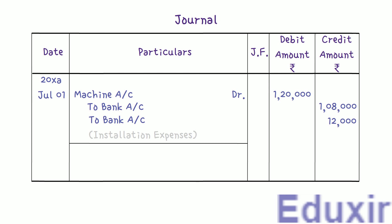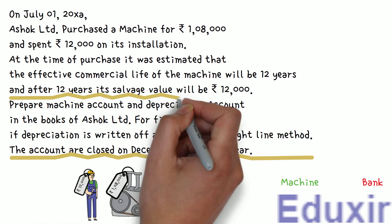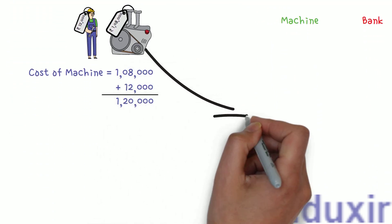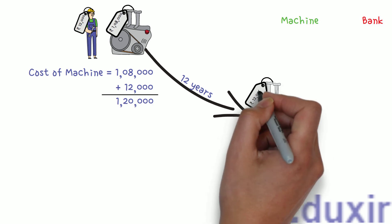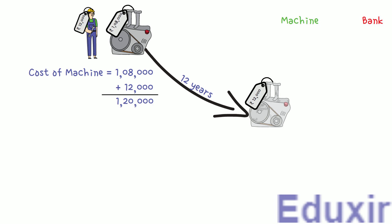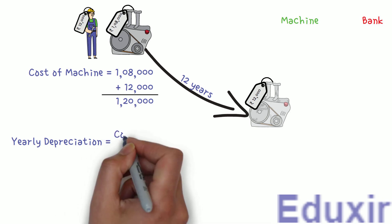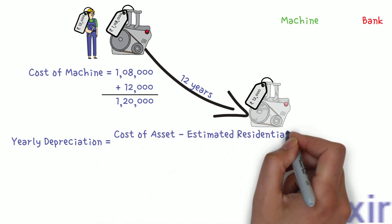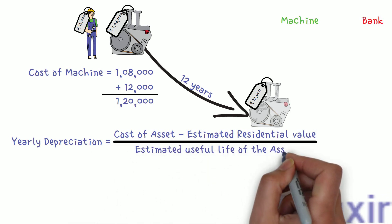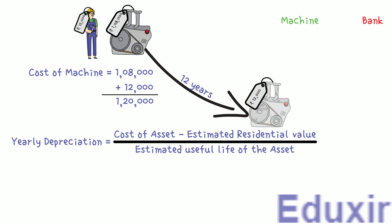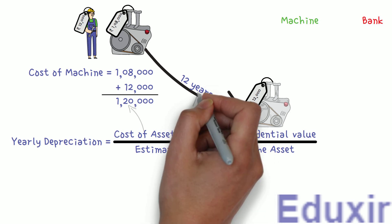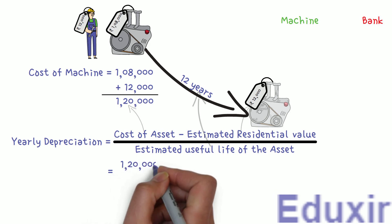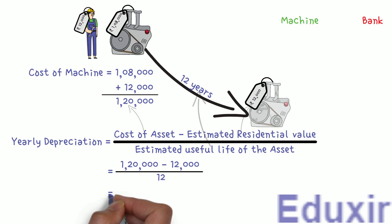When the end of the year is reached, we need to calculate and journalize the depreciation on the machine. The working life of the machine is 12 years, after which the scrap value is ₹12,000. The formula for yearly depreciation is: (Cost of Asset − Estimated Residual Value) ÷ Estimated Useful Life. Substituting: (₹1,20,000 − ₹12,000) ÷ 12 = ₹1,08,000 ÷ 12 = ₹9,000. So the yearly depreciation is ₹9,000.